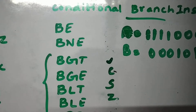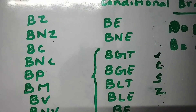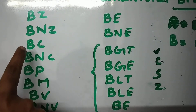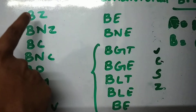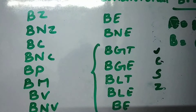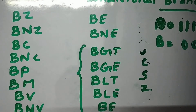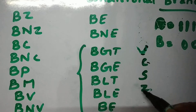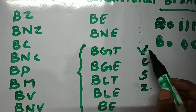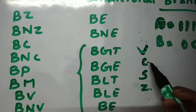Let us see the branch instructions one by one. First: branch if zero, branch if not zero, branch if carry, branch if not carry. Here 'B' represents branch and 'N' represents not. We already discussed the four status bit registers, which are overflow, carry, sign bit, and zero bit. If you get any overflow in the output, that overflow bit will be set to one.